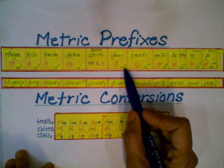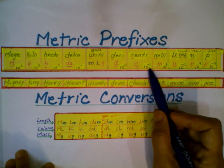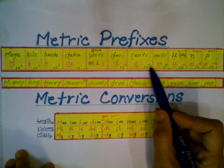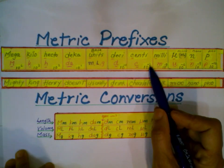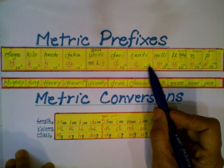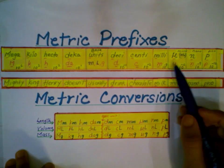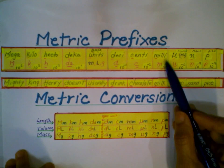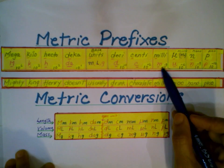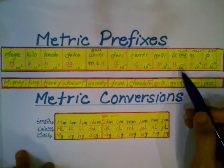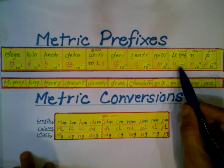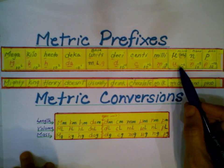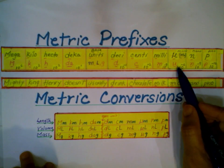Deci means one-tenth of a unit. Centi is 10 to the power of negative 2, meaning the two zeros are in the denominator — that's one-hundredth of a unit. Milli is one-thousandth of a unit. Then you have micro, represented by the Greek letter mu, which stands for 10 to the power of negative 6.